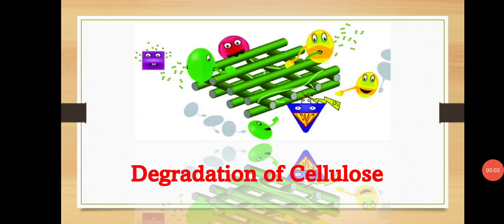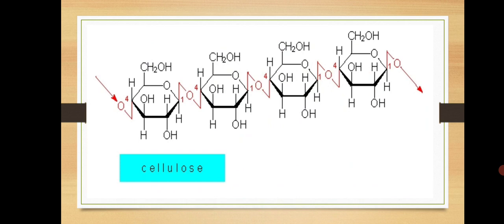Welcome dear students. In this lecture we are going to see the topic called degradation of cellulose. Cellulose is a natural biopolymer and it is generally found in the plant cell wall. Plant cell wall is made up of cellulose. This is the structure of cellulose which is made up of glucose units.